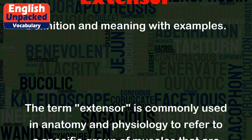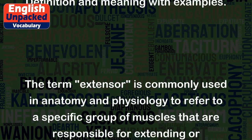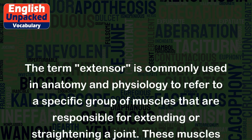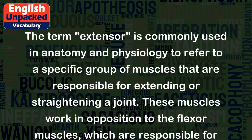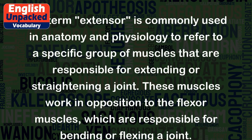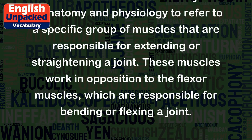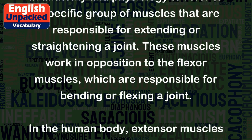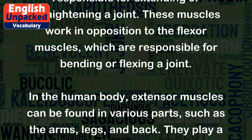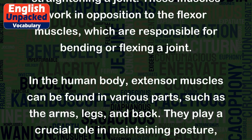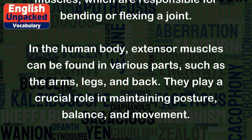The term extensor is commonly used in anatomy and physiology to refer to a specific group of muscles that are responsible for extending or straightening a joint. These muscles work in opposition to the flexor muscles, which are responsible for bending or flexing a joint. In the human body, extensor muscles can be found in various parts, such as the arms, legs, and back.